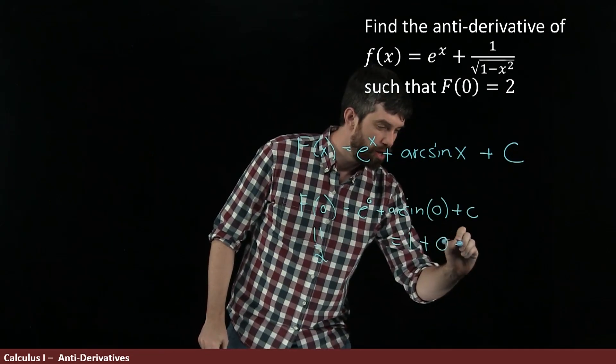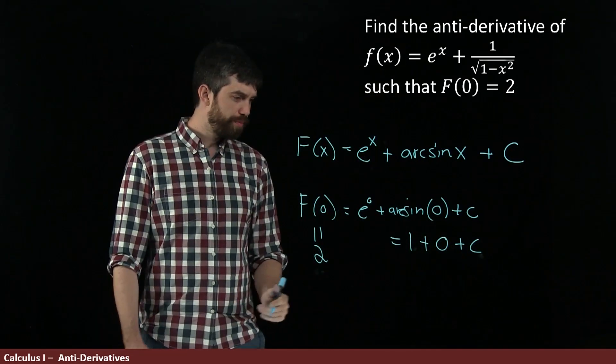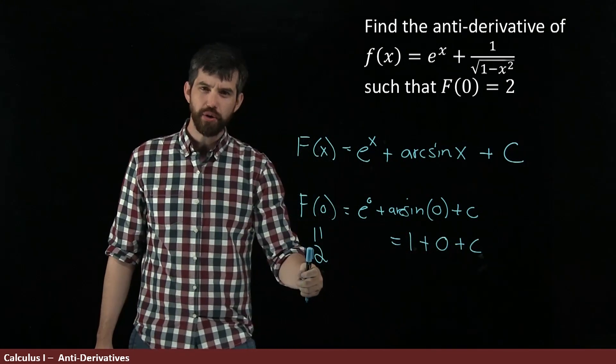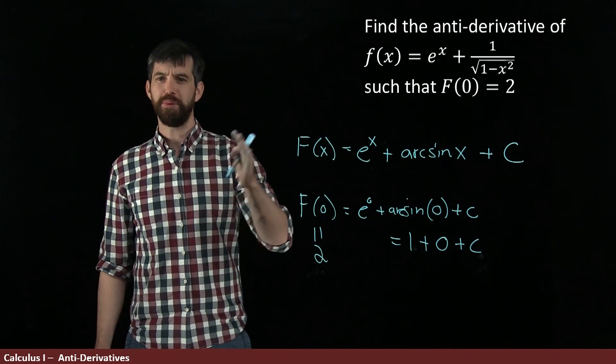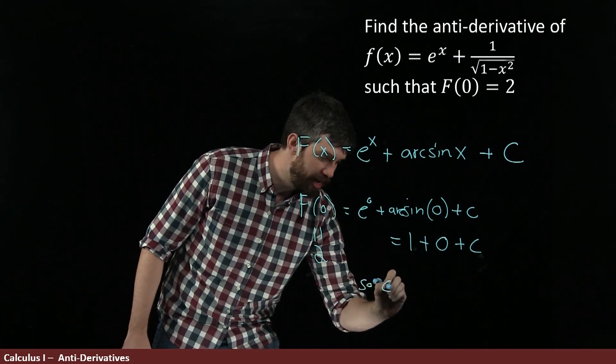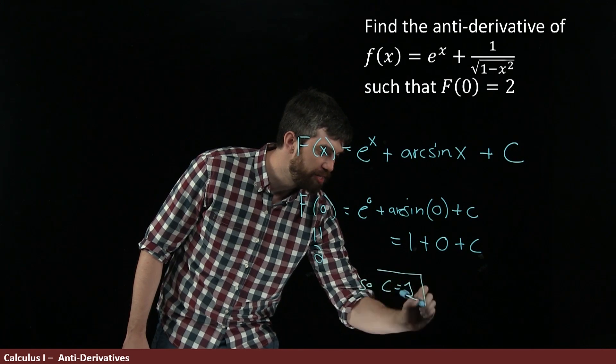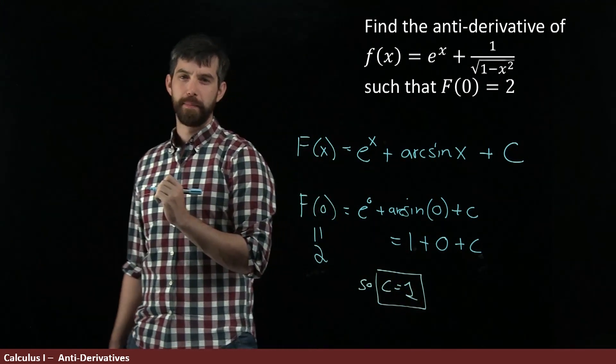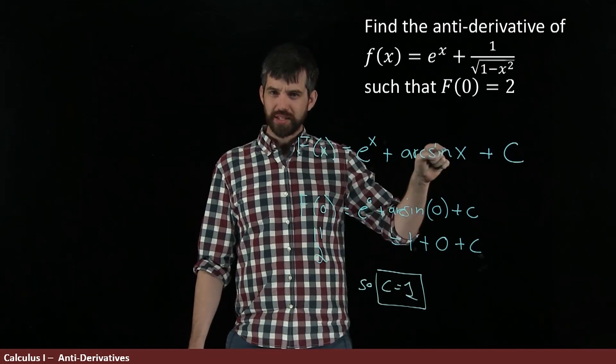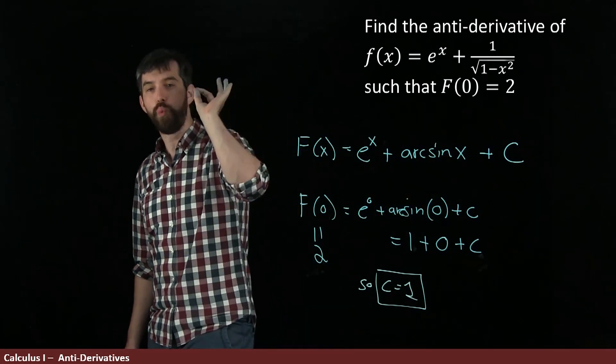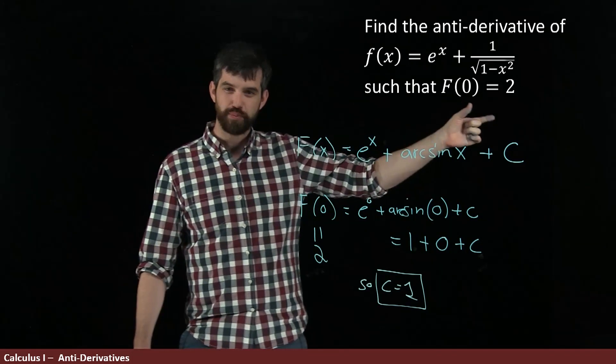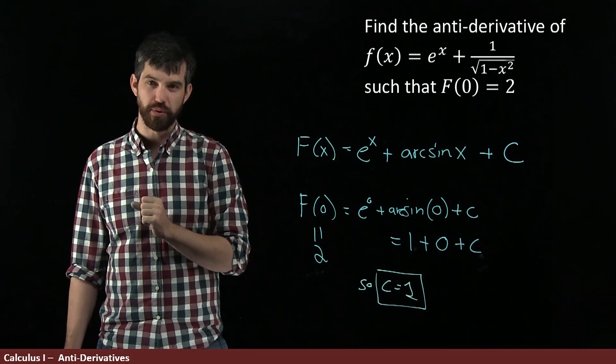So this is going to be 1 plus 0 plus C. I have 1 plus C on the right-hand side, and I want it to equal 2. So I need 1 plus something equals 2. I need C to be the value of 1. In other words, C is going to be equal to 1. And so that is the antiderivative: e^x plus arcsine(x) plus 1 will give me something that is both an antiderivative and has this property that F(0) equals 2.